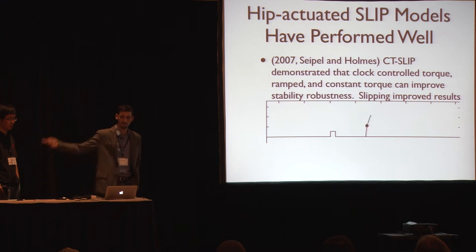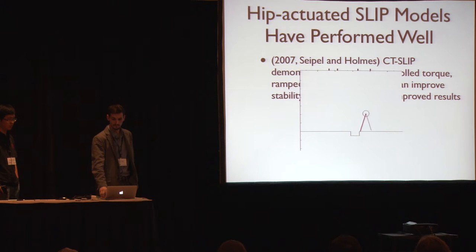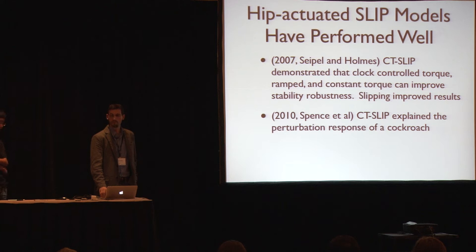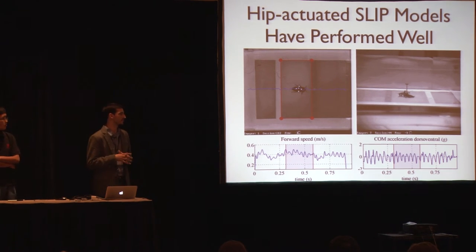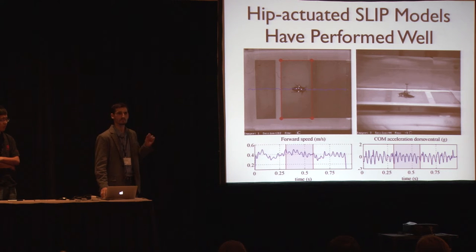If the leg going up and over in the rotation is a little disconcerting, it can do a slightly more biologically inspired trajectory. In 2010, we applied the CT-SLIP model to explain a cockroach experiment going over a membrane. The cockroach was run over a compliant membrane and the vertical acceleration was measured. Interestingly, as in other perturbation experiments, the ground reaction forces — proxied by vertical acceleration — did not change very much, though there was a small change that we were able to predict using the clock-torque SLIP model.